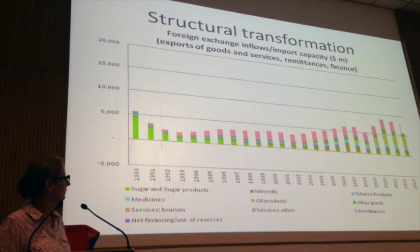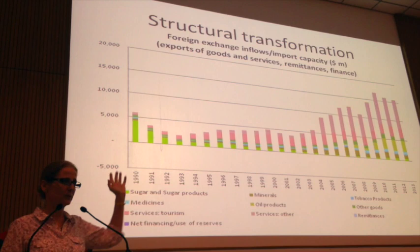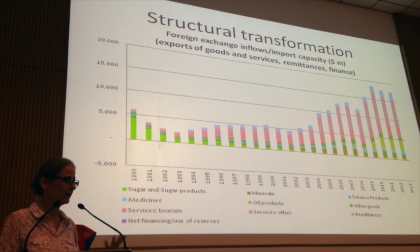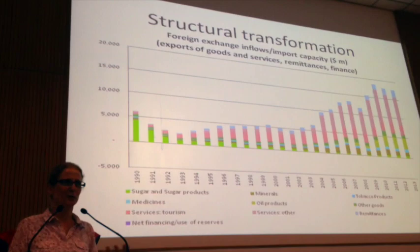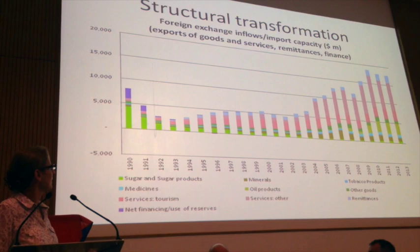Then there's oil products — that surge at the end is the Cienfuegos oil refinery done with Venezuela, so now Cuba imports and exports oil products. Then we have other goods, which is actually not very large — all other goods apart from those selected ones — which shows how little diversification there has been in physical production. Then we move to services, with tourism becoming very important in the 1990s. Post-2004, there's the dramatic arrangement with Venezuela for medical services. Then there are remittances — not nearly as huge as the discussion in the US would suggest.